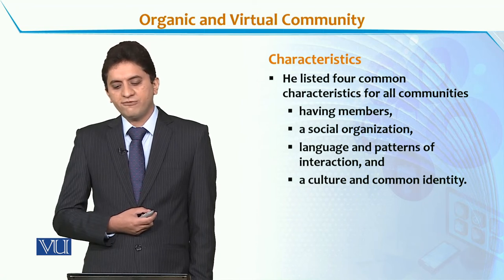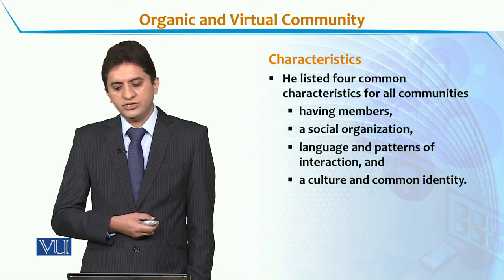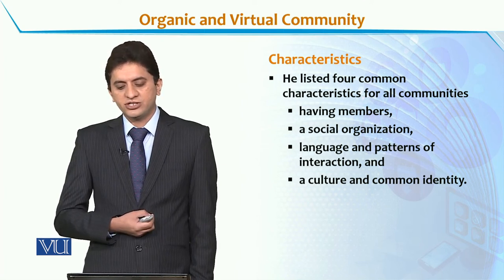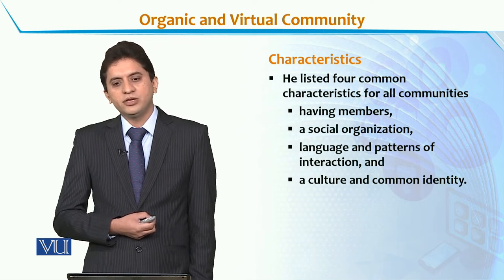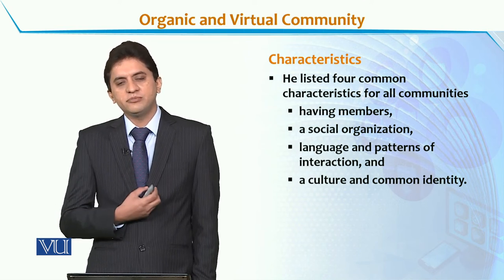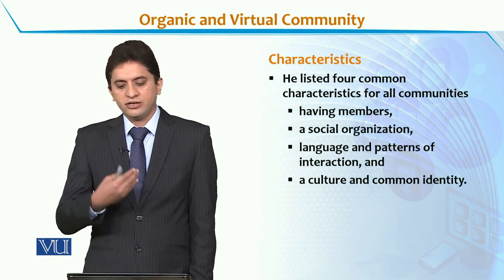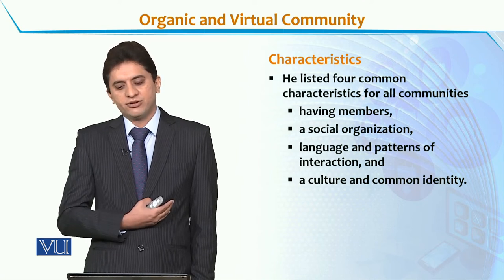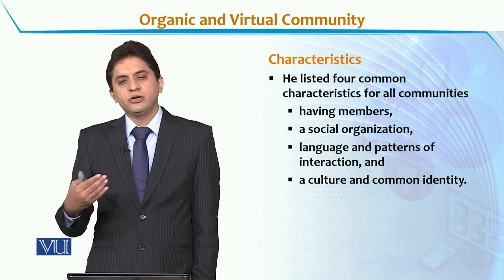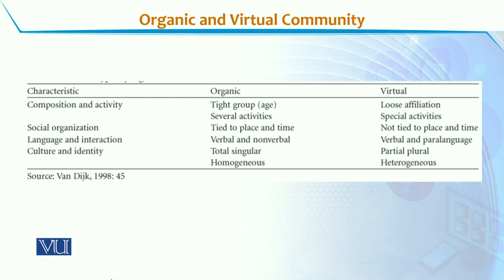He listed actually four characteristics for all communities: membership, social organization, language and patterns of interaction, and culture and common identity. तो इनके मताबिक जो है आपकी physical communities हों जिनको ये organic community कहते हैं, और चाहे वो virtual communities हों, तो ये चार characteristics होंगी जिसकी basis पे हम physical communities को as organic community और virtual community को compare कर सकते हैं. अगर हम organic और virtual community को compare करें based on the four characteristics.